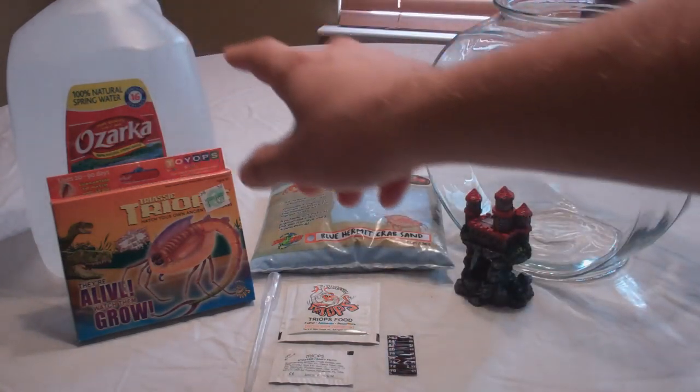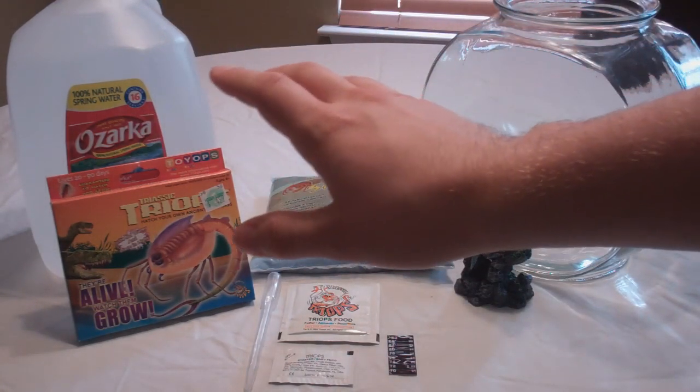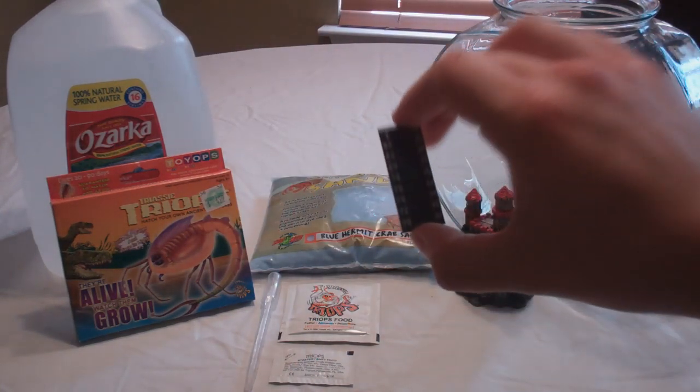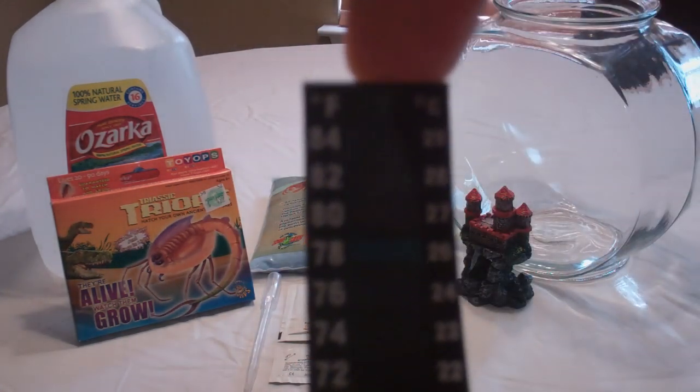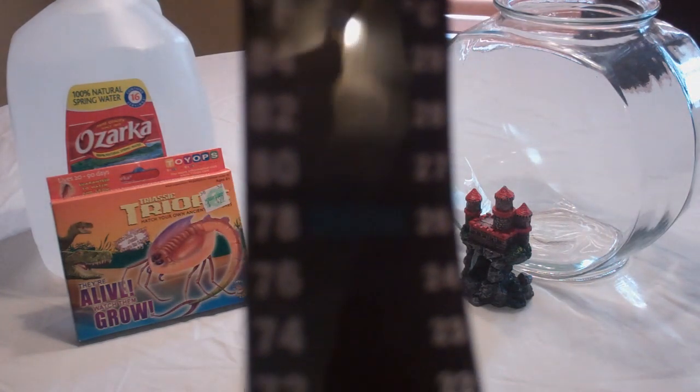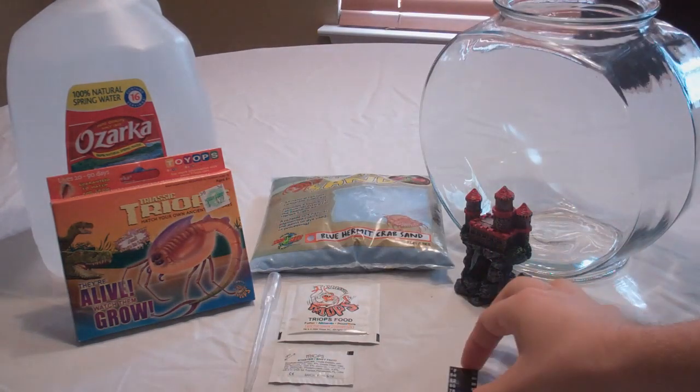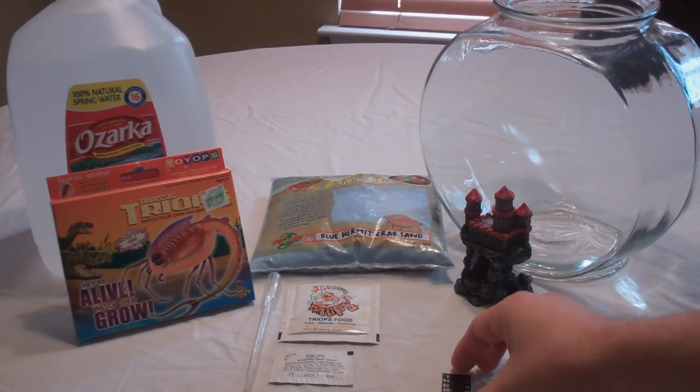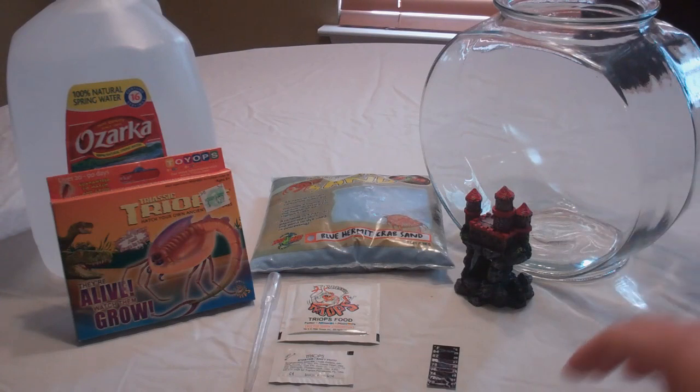We've also had the water sitting inside for about 2 or 3 days now, so it's completely room temperature. As you can see on the thermometer, the temperature is 78 degrees. The temperature you want for your triops is between 74 to 84 degrees. So that is all well and good.